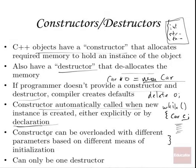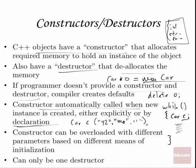You can overload the constructor with different parameters. When you create a new car, you may want to put in the name of the car, the owner, and whatever other data goes in there. So you've got as many different overloaded constructors as necessary with whatever parameters you need to initialize the particular object. But there will only be one destructor. Basically, you built the object however you need to build it, you modify it however you're going to modify it, and when it's time to go, off it goes. But you may need to write a destructor.